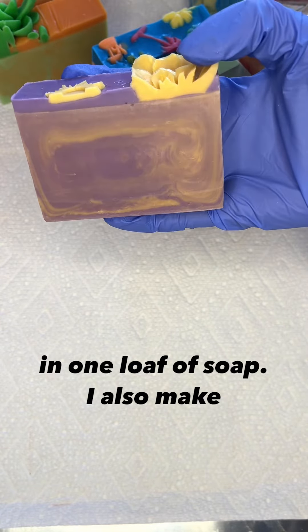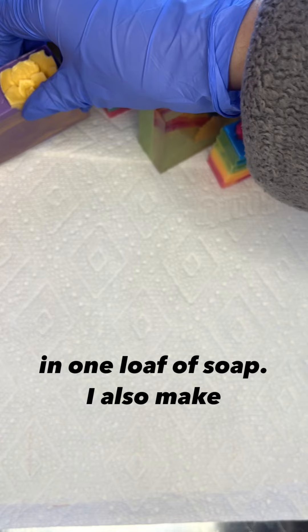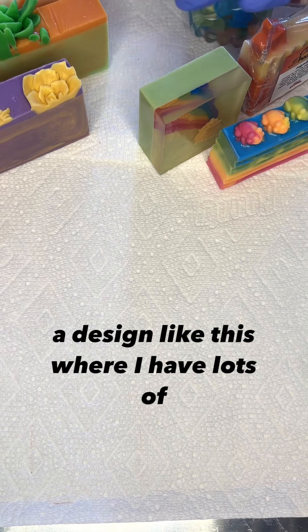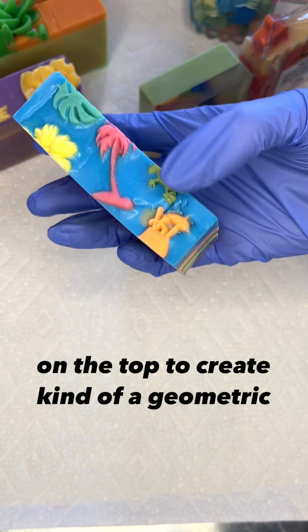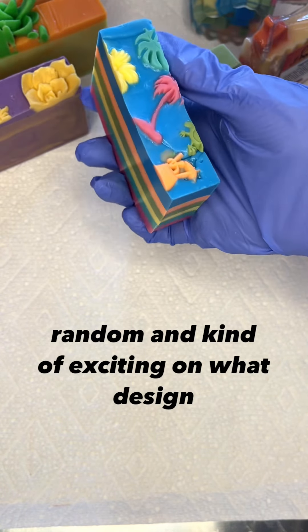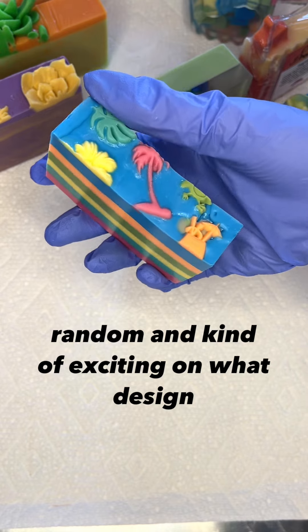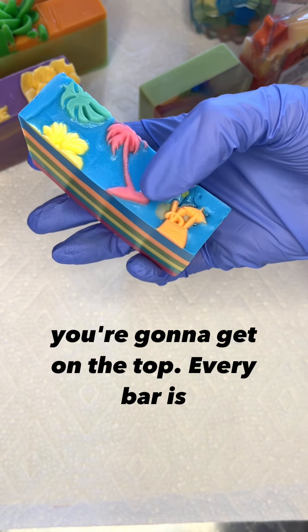In one loaf of soap, I also make designs like this where I have lots of little embeds but they're still cut up on the top to create kind of a geometric pattern on the top. And it's a little bit random and kind of exciting on what design you're going to get on the top. Every bar is individual and unique.